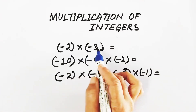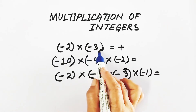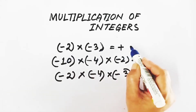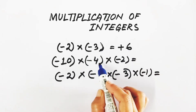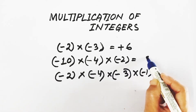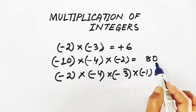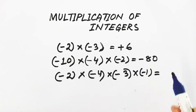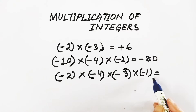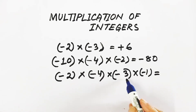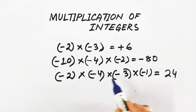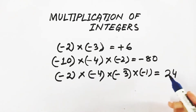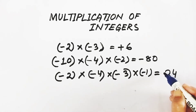Let us take some examples. Here there are two negative multiplicands, so the product should be positive. Simply find the product of the absolute values: 2 into 3 is 6. Similarly, 10 into 4 is 40, into 2 is 80, so the product is 80. But here we have three negative integers — that is an odd number of negative multiplicands — so the sign should be negative. And here we have 4 negative integers, which is even, so the absolute value is 24 and the sign should be positive.